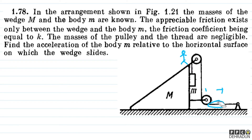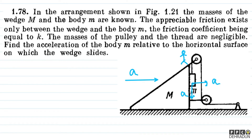Hum log yeh samajh pa raha hai bachon — ki agar yeh jo wedge hai, uska acceleration towards right ki direction mein a hai, toh uske nazariye se jo wedge par baitha hai, uske nazariye mein jo block hai, uska bhi acceleration neeche ki taraf a aayega. Saath hi saath constraint se yeh bhi dek sakte hain ki agar yeh wedge right ki taraf a acceleration se ja raha hai, toh block ko bhi right ki taraf a acceleration se jana hoga — which gives root 2 times a. So simply by observation we find out that if this wedge moves x distance, small m moves x distance down and x distance towards right. So this is our constraint relation.